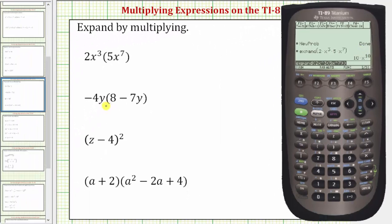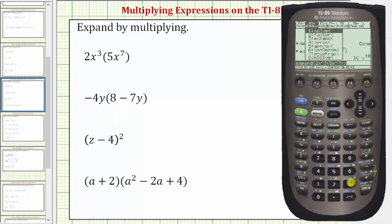For our next product we have negative four y times the quantity eight minus seven y. Let's begin by typing this in just as it looks, though we will get an error. So let's select F2, option three, and then we'll enter negative four y, open parenthesis, eight minus seven y, close parenthesis, another close parenthesis for the expand function and enter.